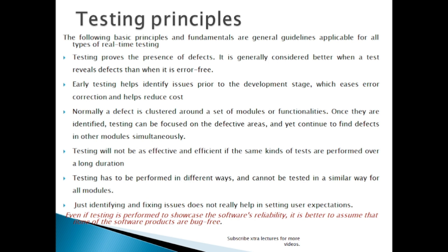Normally, a defect is clustered around a set of modules and functionality. Once they are identified, testing can be focused on the defective area and yet continue to find defects in other modules simultaneously. We divide the software into modules or functionality and apply testing to those areas. Testing will not be effective and efficient if the same kind of tests are performed over a long duration — we need to change the test cases and the testing methods.